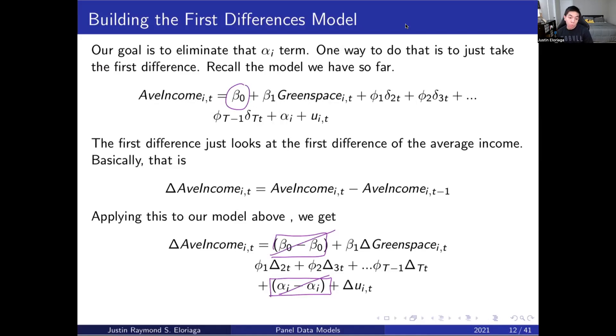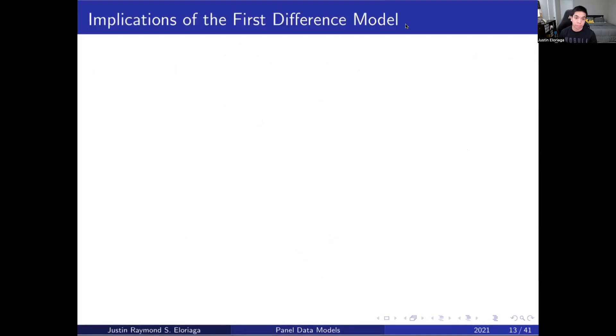However, in this case now, we do not have the problem of this alpha_i term which we said was causing a lot of issues. And notice that beta_0 and the alpha_i will just cancel out in our formulation.